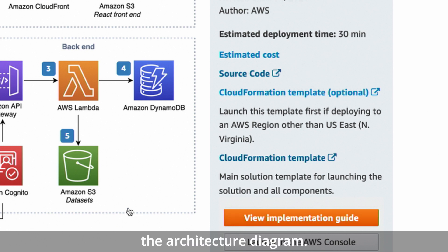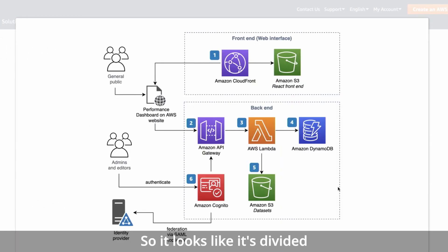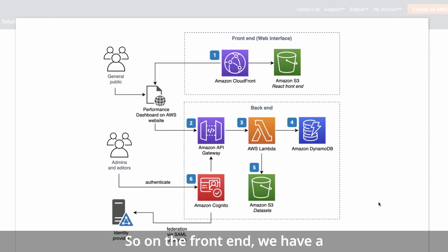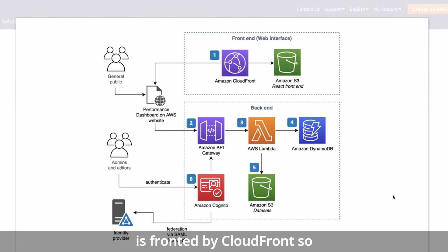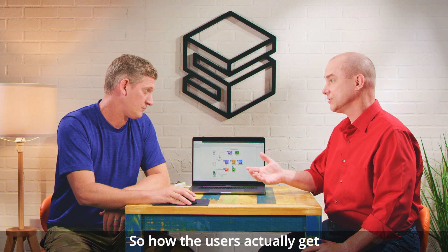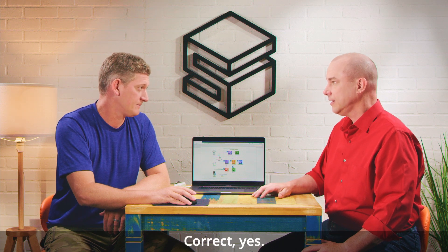Let's bring up the architecture diagram. So it looks like it's divided into front-end and back-end. Let's walk through the front-end first. So this is essentially a web app. On the front-end, we have a React app hosted in S3, and that is fronted by CloudFront so that everyone's accessing it through that CloudFront distribution — that's how the users actually get to the dashboard.